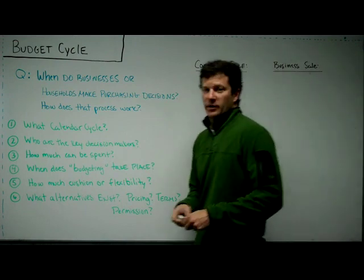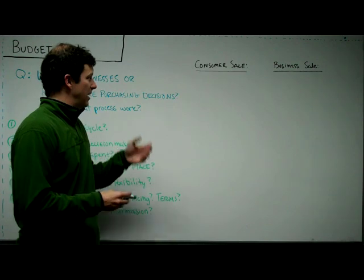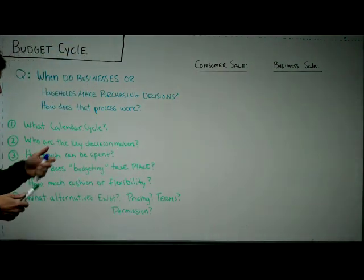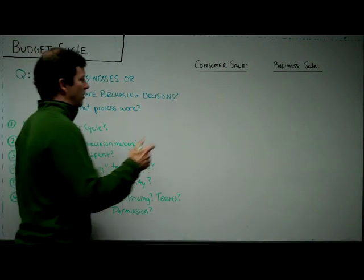So let's look at a couple examples. We'll look at a consumer product and a business sale, a business product. From a consumer perspective, your budgeting cycle may look like this.